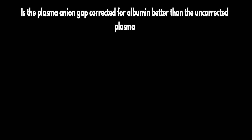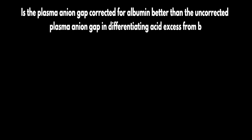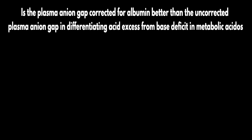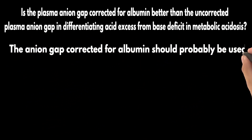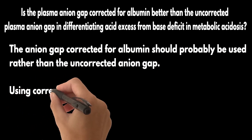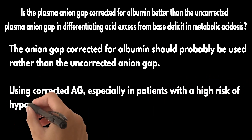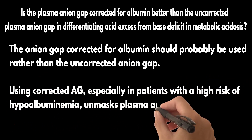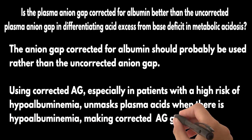Is the plasma anion gap corrected for albumin better than the uncorrected plasma anion gap in differentiating acid excess from base deficit in metabolic acidosis? The anion gap corrected for albumin should probably be used rather than the uncorrected anion gap. Using the corrected anion gap, especially in patients with a high risk of hypoalbuminemia, unmasks plasma acids, making the corrected anion gap greater than the uncorrected anion gap.